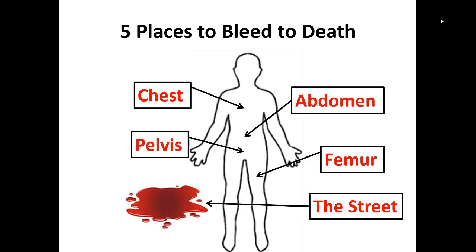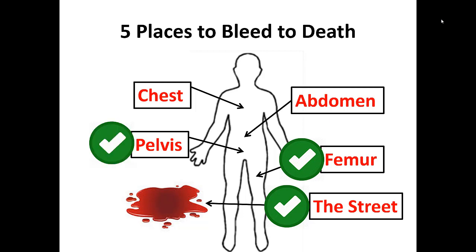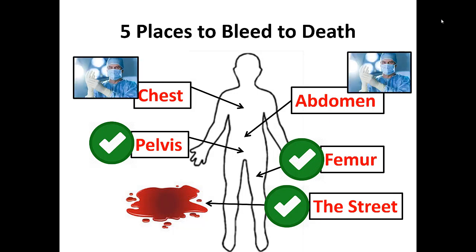If you remember, there are five places to bleed to death. We have the street, which is extremity hemorrhages that we can control with tourniquets. There's the femur, which we can recognize and try to splint or use a tourniquet if necessary. We can stabilize the pelvis with a pelvic binder, but some of our trickiest hemorrhages that we just need to recognize are in the abdomen and the chest. There's not a lot we can do in the field other than have a high degree of suspicion and get them to the hospital quickly, because the only people that can help are located there.